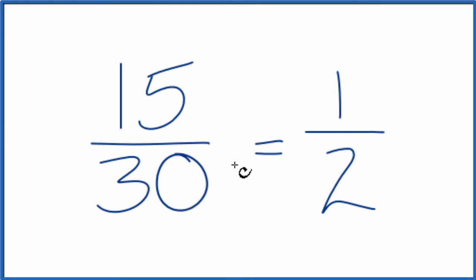There is another way we could do this if you didn't know that 15 went into 30 evenly. We can see that 5 will go into both 15 and 30. So if we divide the top and the bottom, the numerator and the denominator, by 5, 15 divided by 5 is 3. And 30 divided by 5 is 6. 6 times 5 is 30.